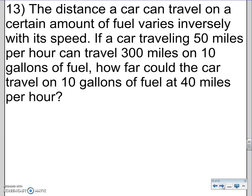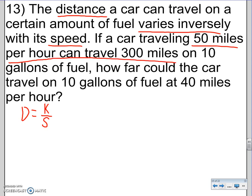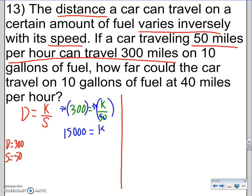Word problem, variation. This is a distance, car can travel on a certain amount of fuel varies inversely. So, distance varies inversely. D equals inversely division. K over, inversely with speed. Let's call it speed S. So, now we have to figure out the known situation. So, we find K. You have a car traveling 50 miles per hour. So, that's speed. Can travel 300 miles. That's distance. So, I know D equals 300 when S equals 50. Let's use that to find K. D is 300 equals K over S is 50. Multiply by the denominator. 50 times 300 is 15,000. We found K. So, now we know the real equation. D equals 15,000 over S.